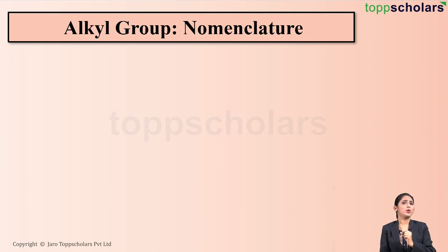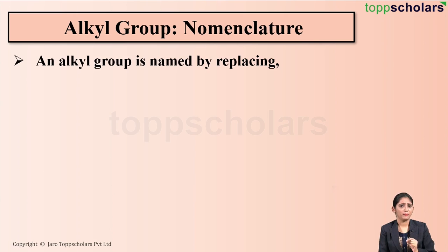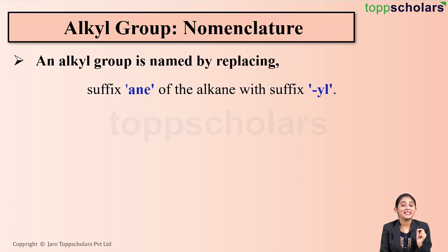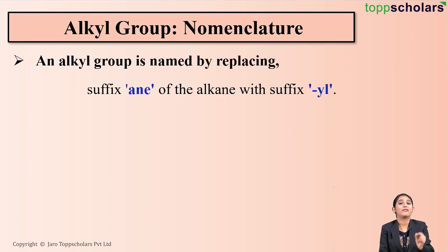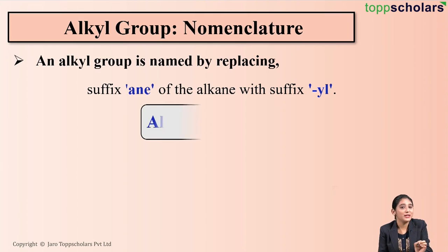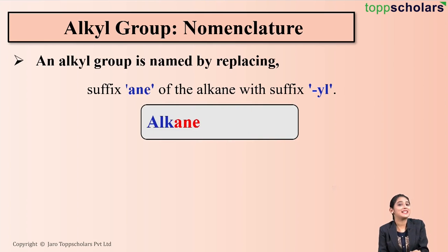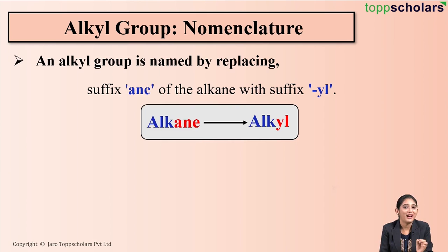Now how do we actually name an alkyl group? It's very simple. In order to name an alkyl group, you need to simply replace the suffix '-ane' of the alkane with the suffix '-yl'.